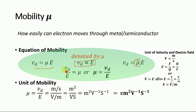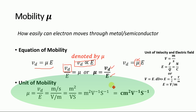From this equation, mobility equals drift velocity divided by electric field. The drift velocity is the velocity with which electrons move inside the conductor or semiconductor, and the electric field is the applied electric field. Generally, the electric field and drift velocity are in opposite directions, but since we need a positive mobility value, we do not consider the direction. So mobility equals drift velocity divided by electric field.